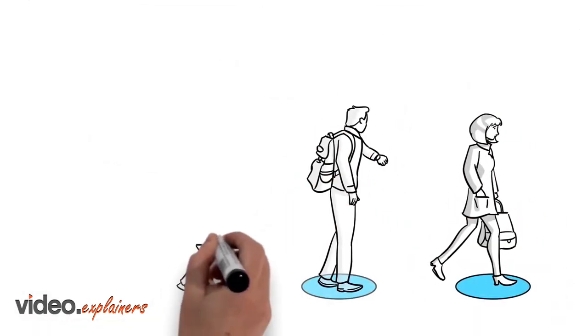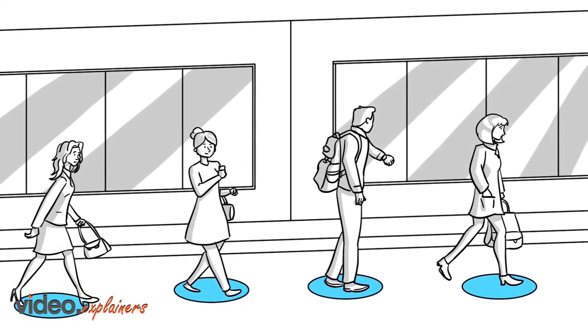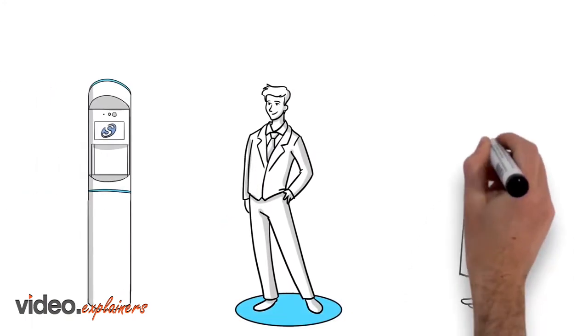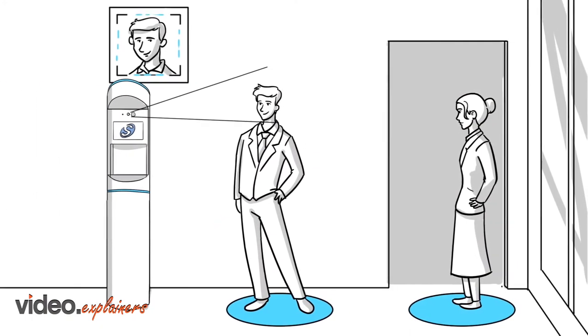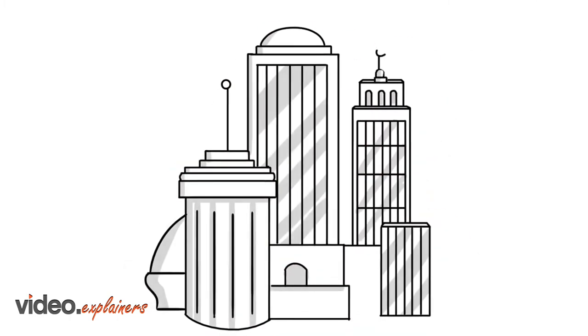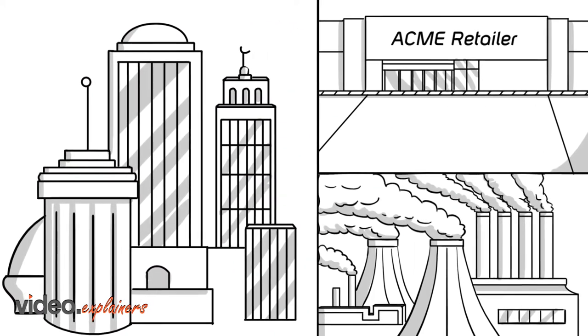Each employee is scanned. The kiosk provides key information about the result of the scan and other guidance. Synergy Clear can be installed in retail, manufacturing, or office settings.